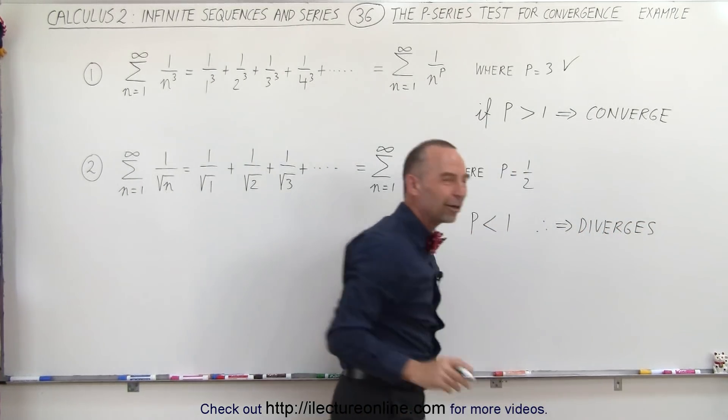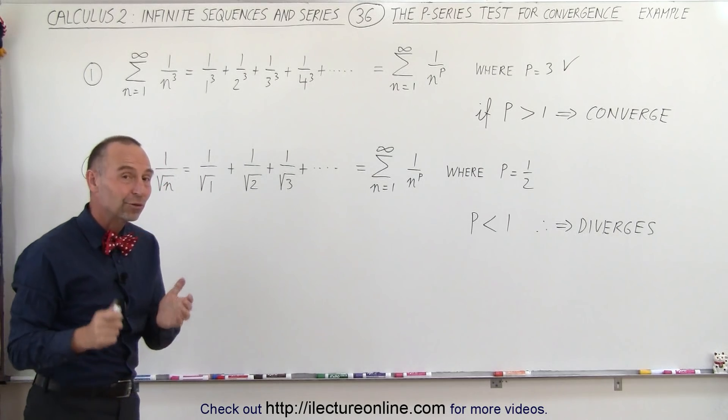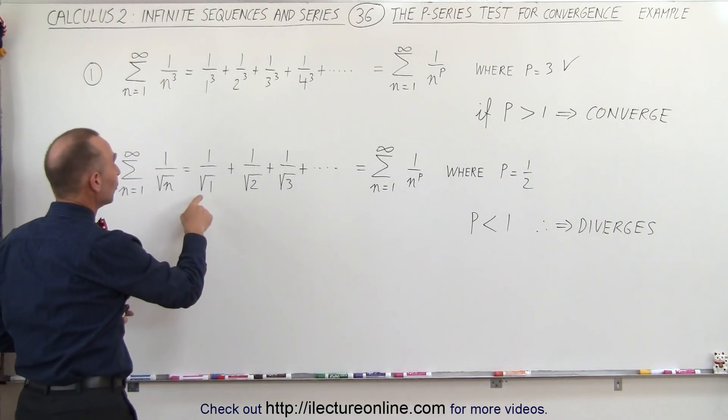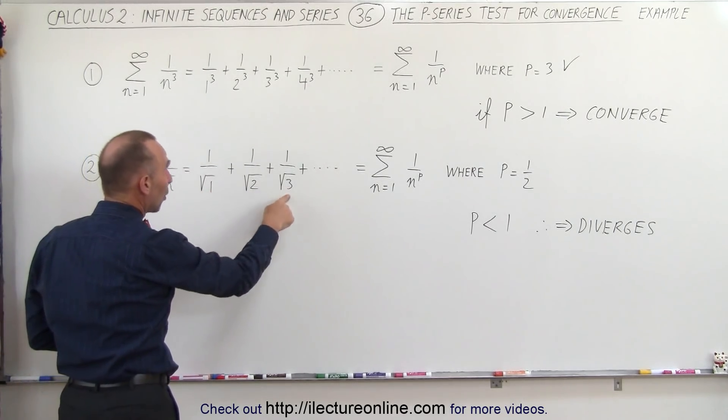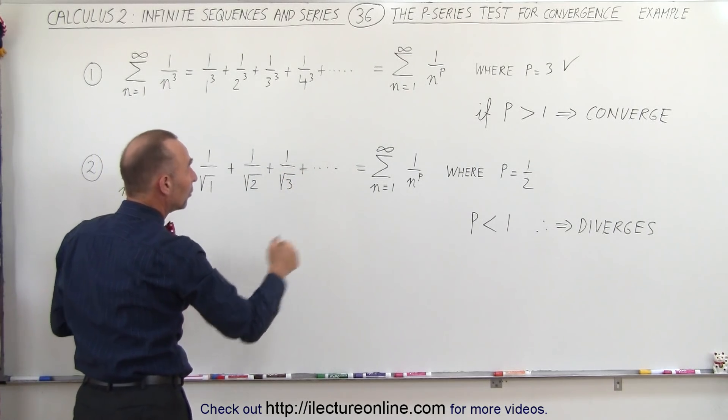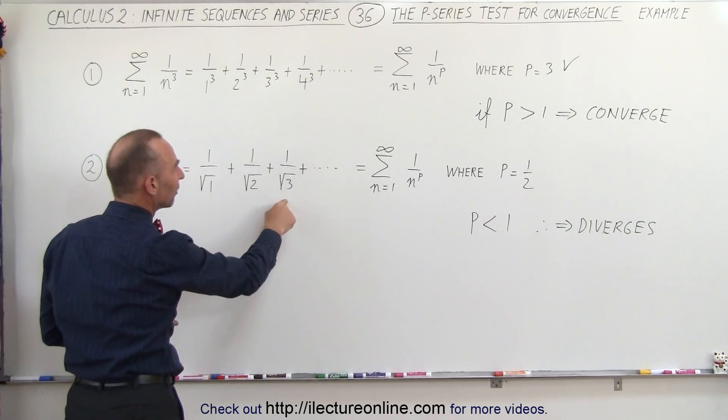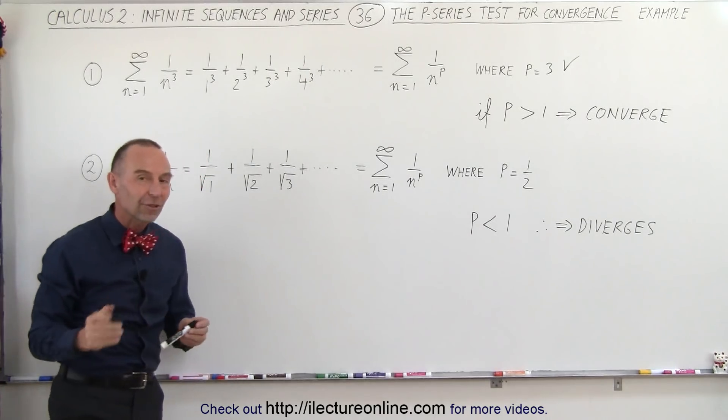It seems kind of odd in a way when you use your intuition. Sometimes your intuition will get you into trouble, but even though the denominator continues to grow, because the square root of a growing number will still grow, but it doesn't grow fast enough, and therefore the series does not converge.